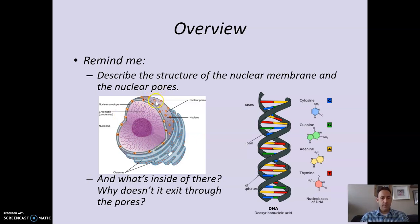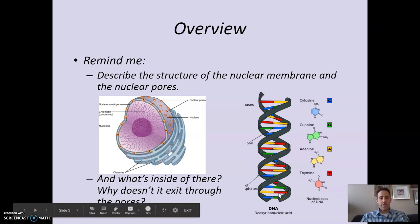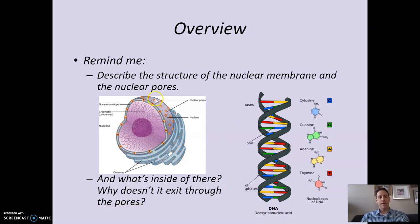There are little holes called nuclear pores. Those pores let most things in and out. There is one thing, though, that's so huge it can't go in and out — and that's the main thing the nucleus is there to store: DNA. The DNA is inside the nucleus, and it's a huge molecule, so it's not able to pass through those pores, even while almost everything else in the cell can.